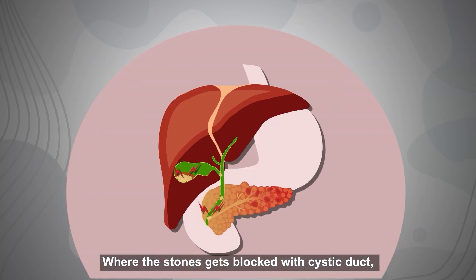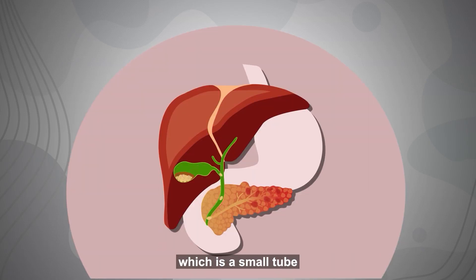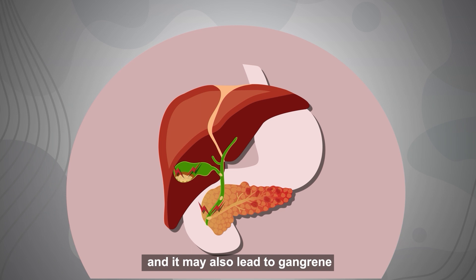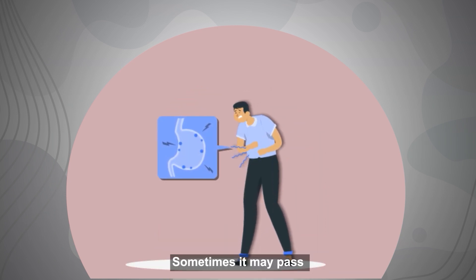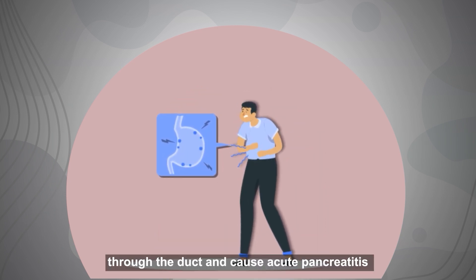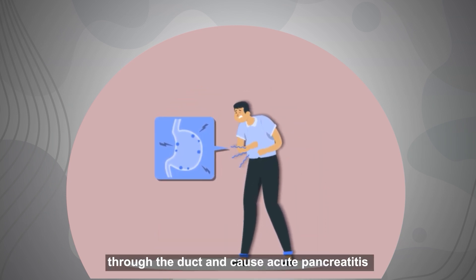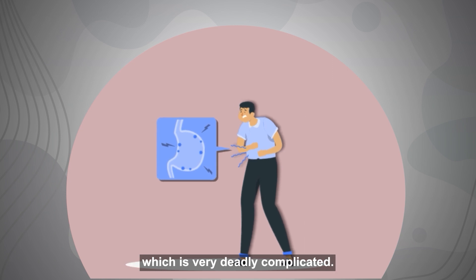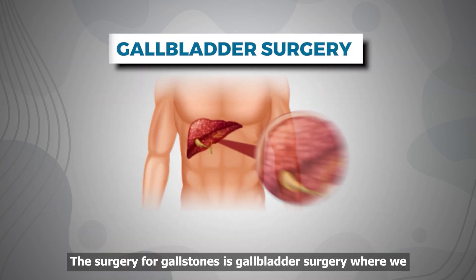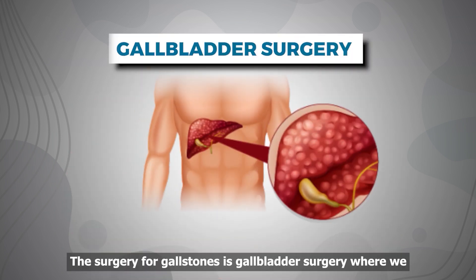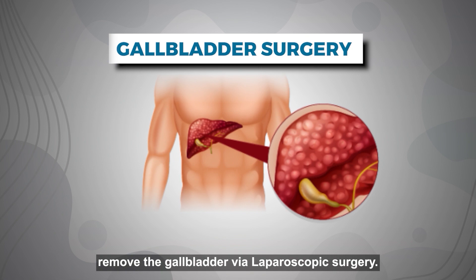Where the stones get blocked by the cystic duct, which is a small tube, and causes severe abdominal pain. It may also lead to gangrene of the gallbladder. Sometimes it may pass through the duct and cause acute pancreatitis, which is very deadly. The surgery for gallstones is gallbladder surgery, where we remove the gallbladder via laparoscopic surgery.